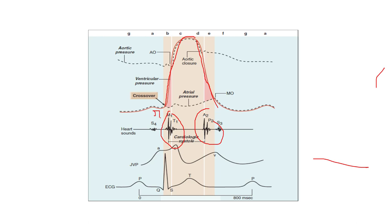So S1 is actually a combination of two sounds - mitral and tricuspid closing - marking the end of diastole and the beginning of systole. The S2, or the dub sound that we hear in auscultation, is a combination of the aortic and pulmonic valves closing at the end of systole, marking the beginning of diastole, as the heart has relaxed and returned to passive filling to complete another cycle.